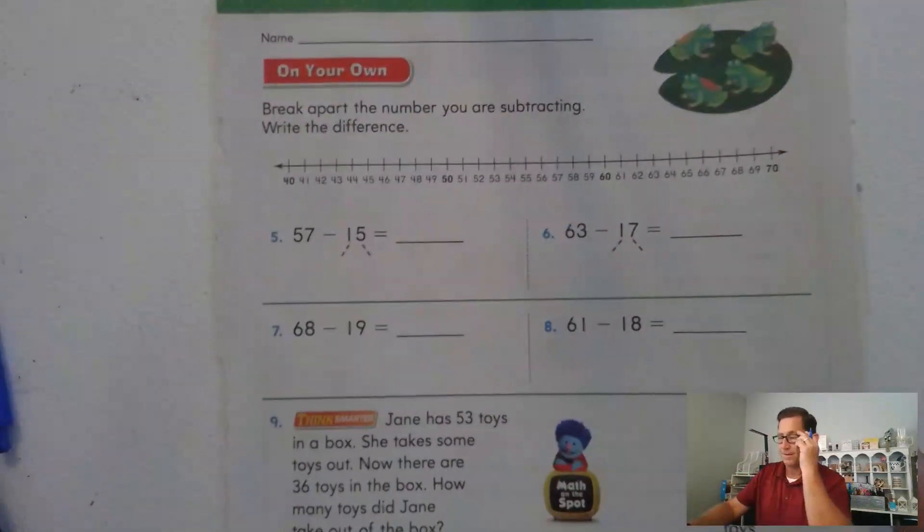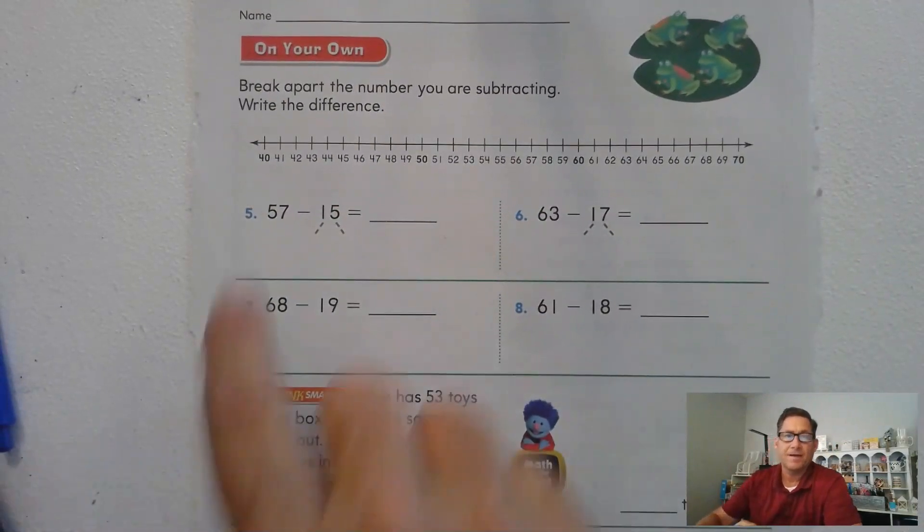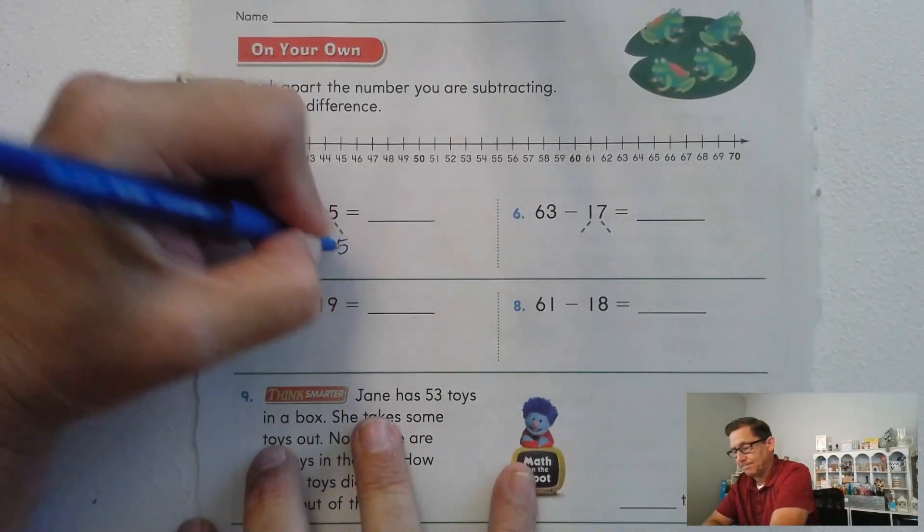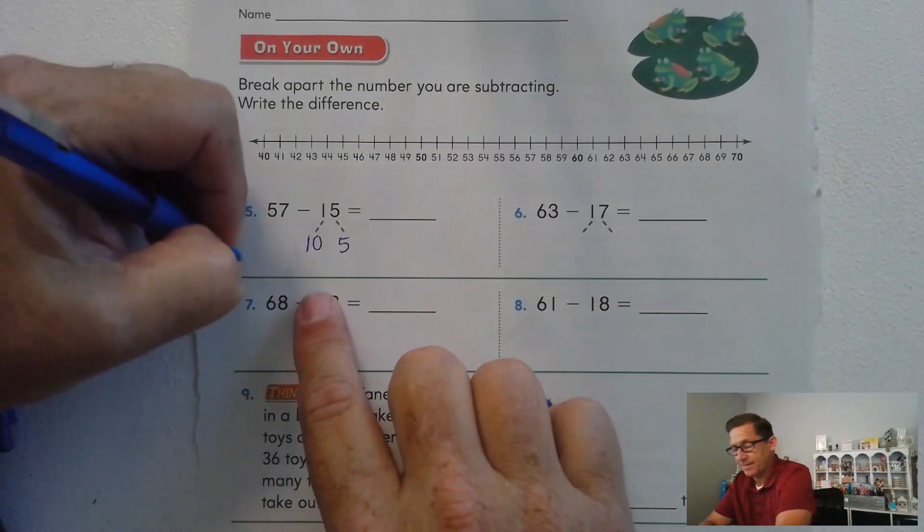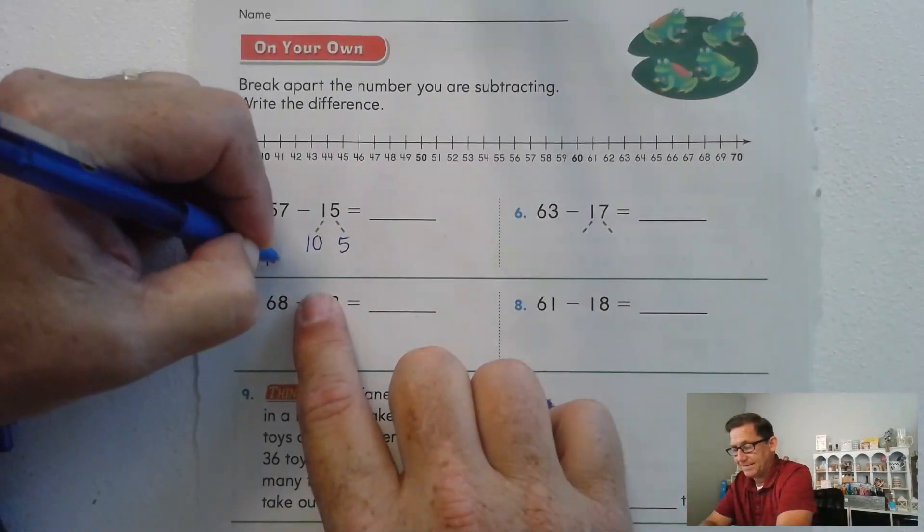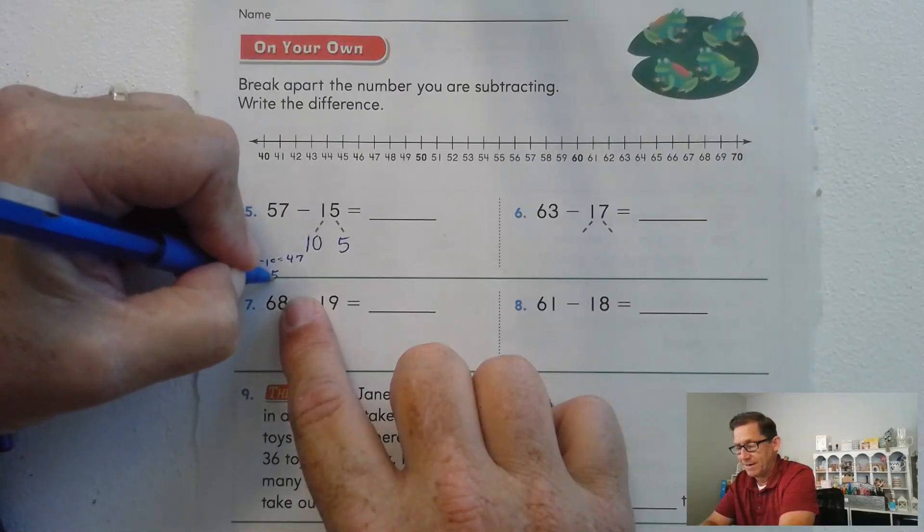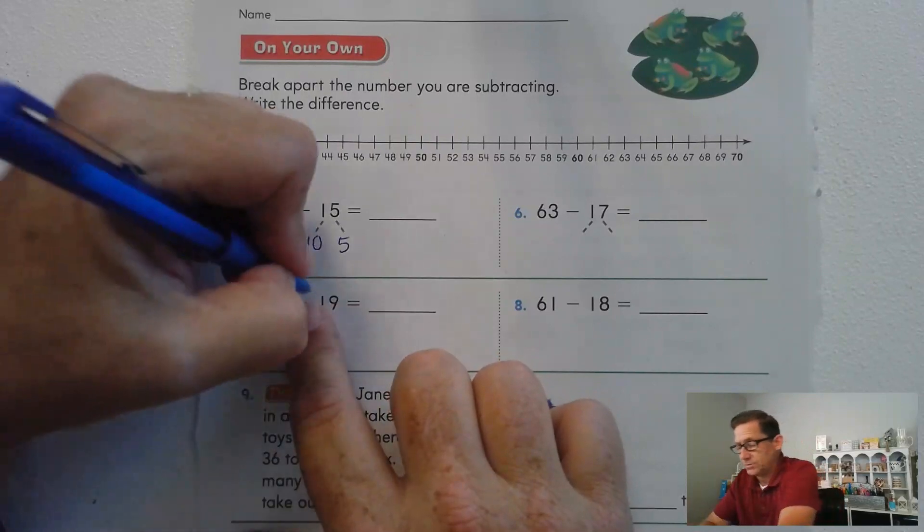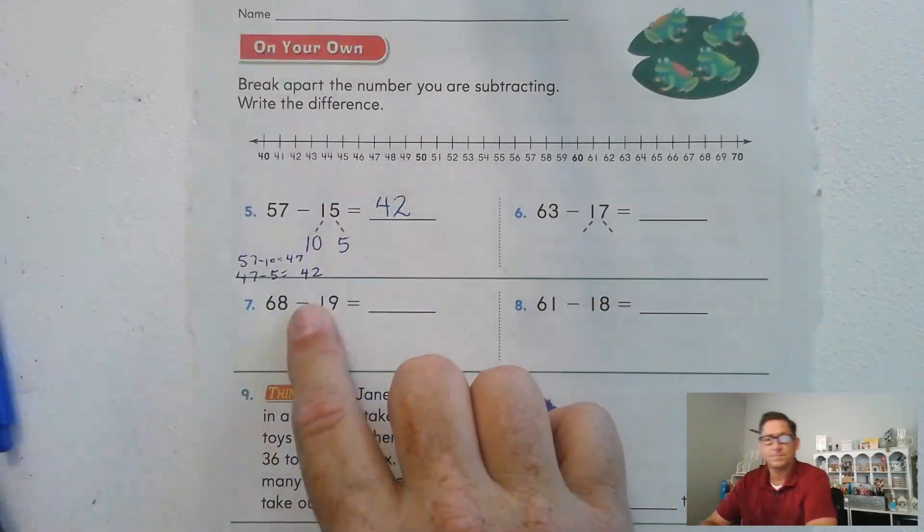Let's keep on going. Page 235. Break apart the number you're subtracting and write the difference. 57 minus 15. We're going to start by subtracting 10 from 57. 57 minus 10 puts you at 47. 47 minus 5. Well, what's 7 minus 5? 2. So 42.